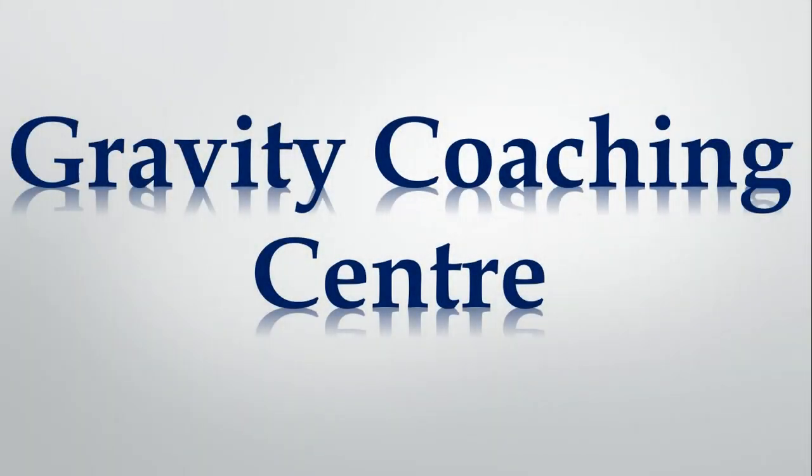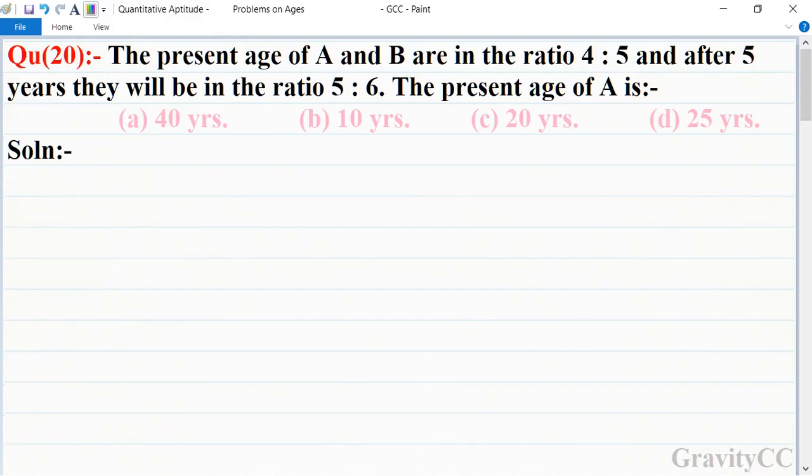Welcome to Gravity Coaching Center. Problems on ages, question number 20: The present age of A and B are in the ratio 4:5, and after 5 years they will be in the ratio 5:6. What is the present age of A? In this question, first of all, we let the present age